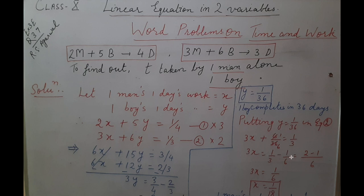So 3x is 1 by 3 minus 1 by 6, so we are getting 3x is 1 by 6, that means x is 1 by 18. So 1 man's 1 day work is 1 by 18, that means in 18 days he will complete the work.